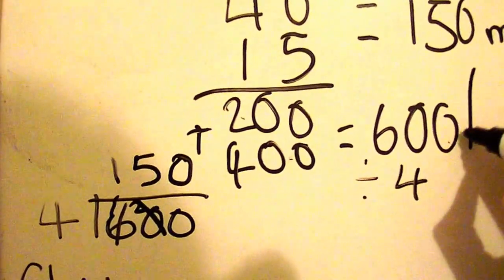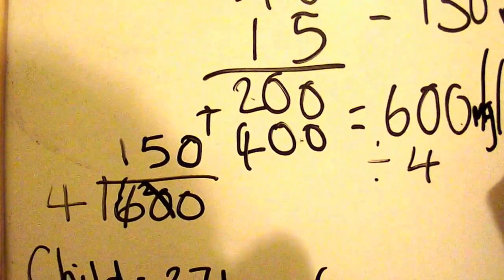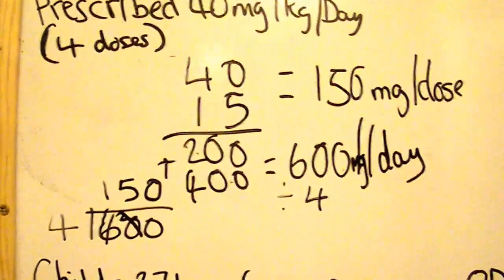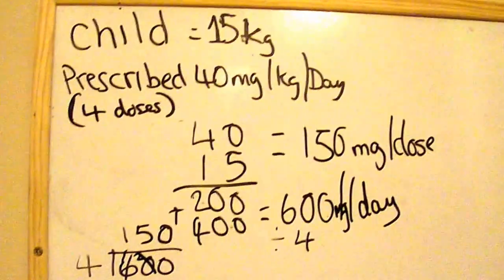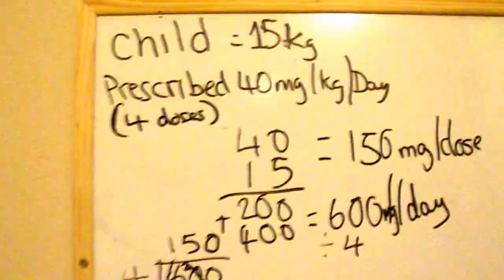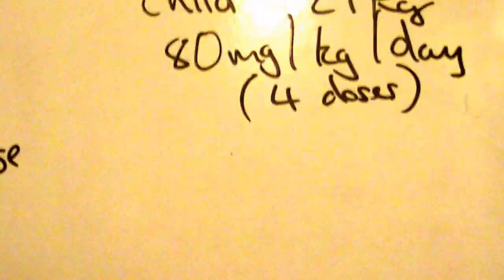So here you've got 600 milligrams per day. And then you divide it by 4 to get the dose. So I'll just zoom out for you if you want to take a picture of that, rewind, do whatever you need to do. But I'm just going to go straight on to the next calculation for you.